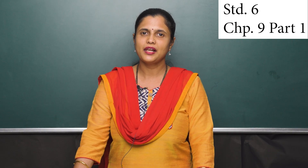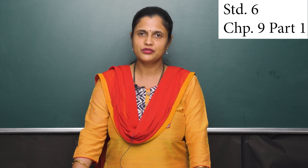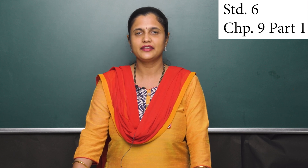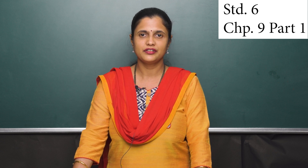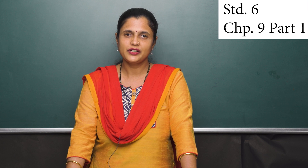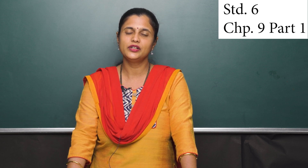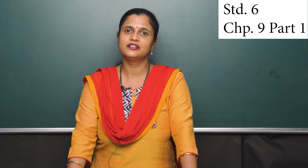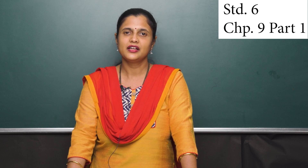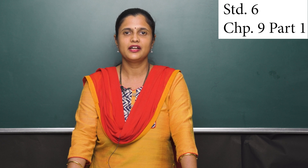We know that some plants grow from seeds. When the seeds sprout, we say it has germinated, and the process is called germination — this is the beginning of a new plant from the seed. But this is not possible without the abiotic factors such as air, water, light, heat, etc. Abiotic factors change over a period of time. Those animals which cannot adapt to these changes die out and only the adapted ones survive. Different animals adapt to different abiotic factors in different ways, and this results in the formation of a variety of animals in different habitats.